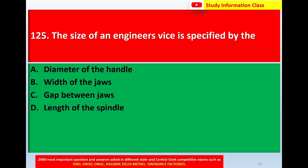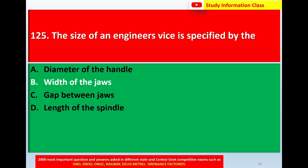Question number 125: The size of an engineering vise is specified by — Option A: Diameter of the handle, Option B: Width of the jaws, Option C: Gap between jaws, Option D: Length of the spindle. The correct answer is Option B: Width of the jaws.